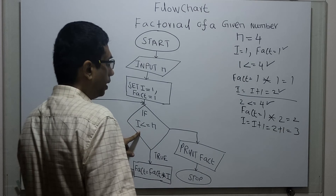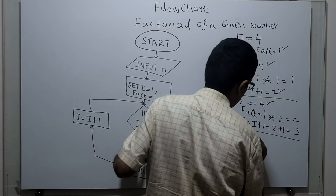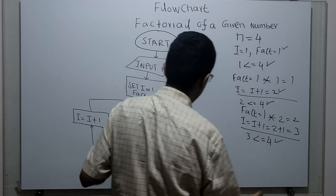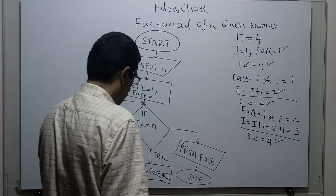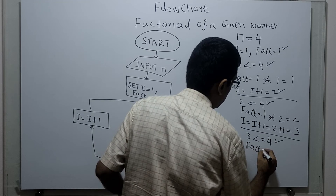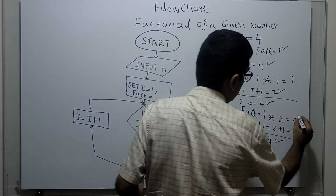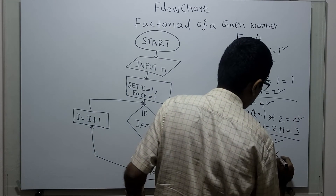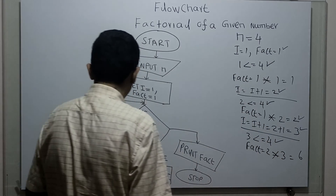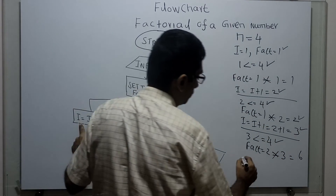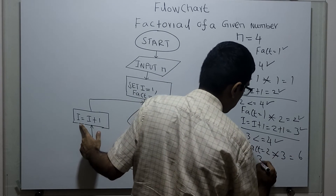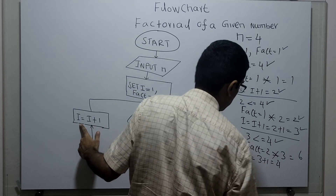Again I am checking i less than or equal to n. i value 3 less than or equal to 4, which is true. Fact equal to fact multiplied by i. Existing value of fact is 2, multiplied with i value 3, so fact equal to 6. I am incrementing i by 1 — existing value of i is 3 plus 1, which equals 4.